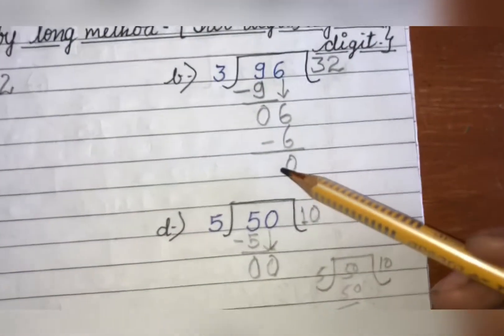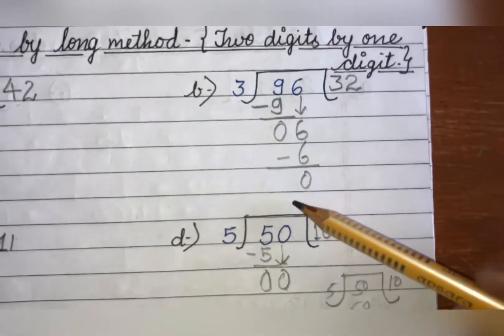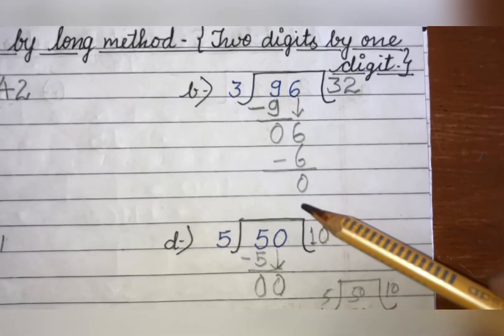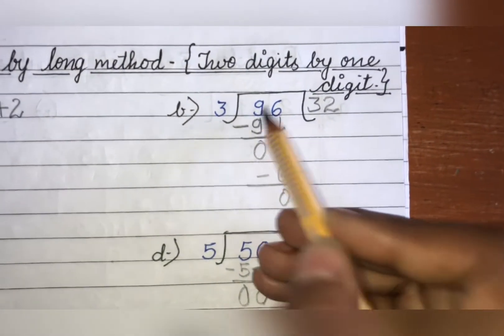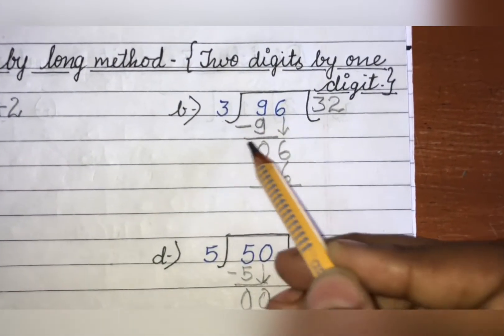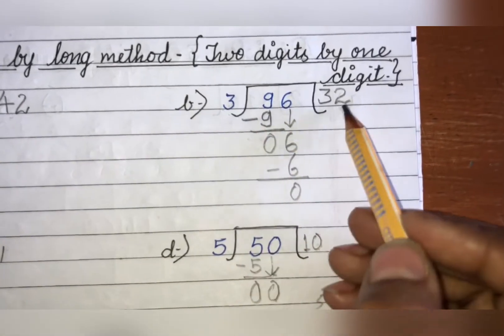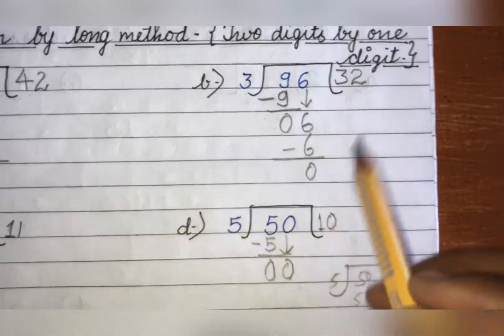Next we have to divide 96 by 3. So first of all you will take 9. 3 3's are 9, minus 0 and 3 2's are 6, minus 6 equals 0.